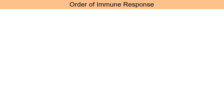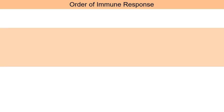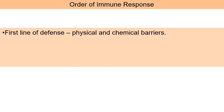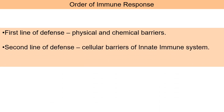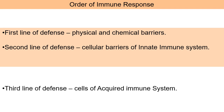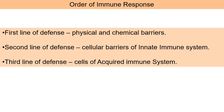The immune system acts in an orderly manner to combat infection. Whenever there is invasion by any foreign elements, the first line of defense acts — it consists of the physical and chemical barriers. If the first line of defense fails, the second line of defense comes into play, consisting of the cellular barriers of the innate immune system. If the second line fails too, the third and final line of defense comes into play, which consists of the cellular components of the acquired immune system, i.e., the B and T cells.